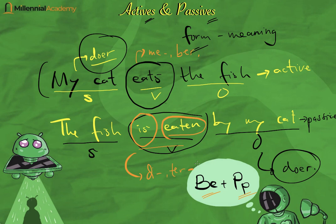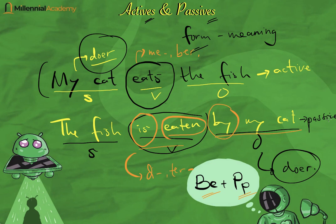'Ikan tersebut dimakan oleh kucing saya' — dimakan or termakan. So 'me-', 'di-', 'ter-' — those are the significant differences between active and passive. Also important: the word 'by' appears in passive sentences when there is an object. However, it's not always present, because sometimes we don't know who performed the action — for example, 'my fish was eaten' but I don't know who ate it. So the 'by' phrase and the object are not always present in a passive sentence.